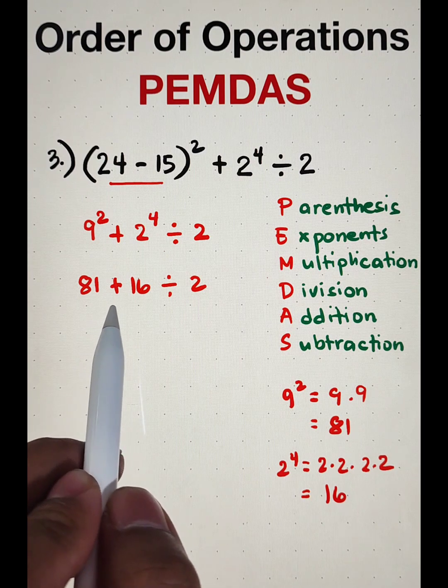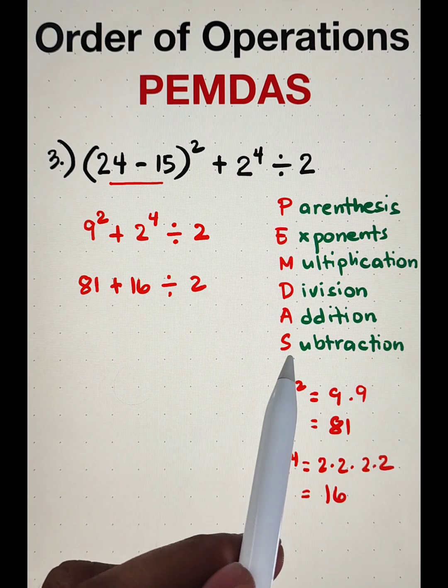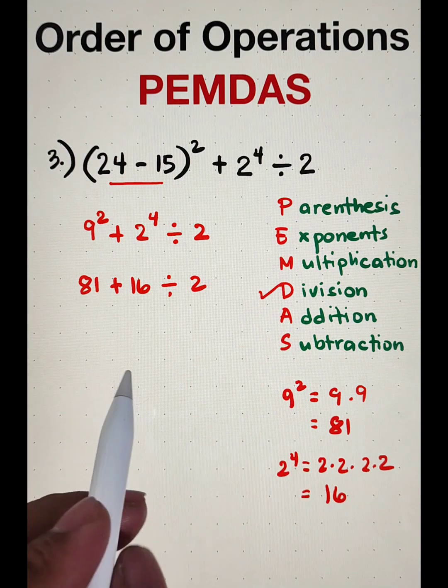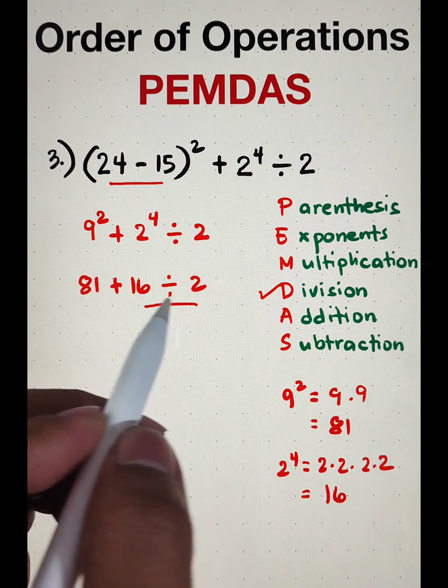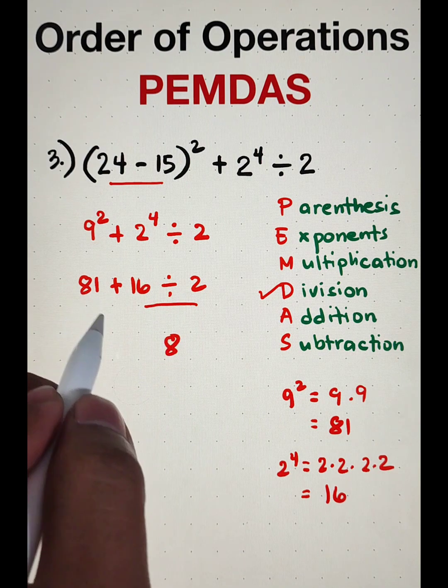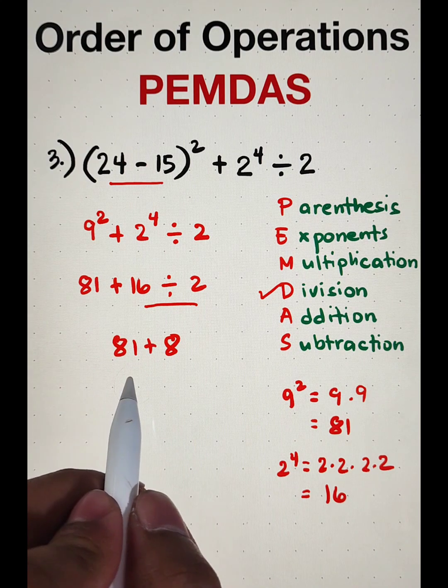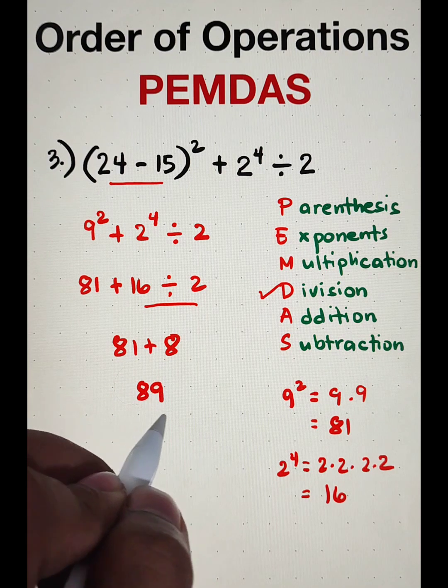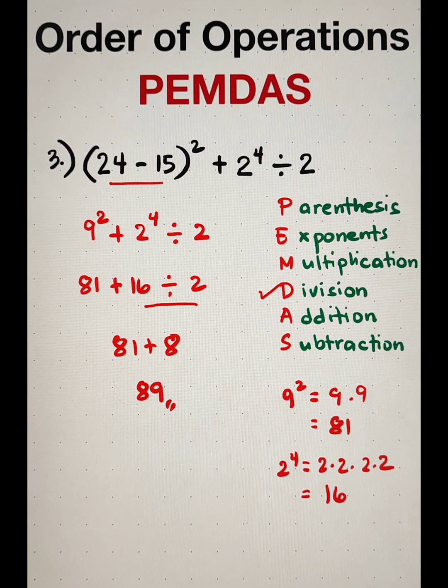So, the remaining operations are addition and division and based on our PEMDAS, we will go first with division. So, we will try to simplify this first. 16 divided by 2 is equal to 8. Then, copy 81 plus 8. Simplify 81 plus 8 is simply 89. And as you can see, this is the answer for item number 3.